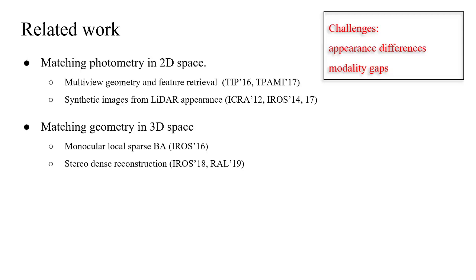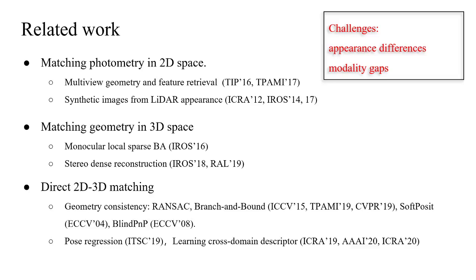Similarly, for stereo camera, we can reconstruct dense point clouds and match with LiDAR maps. The third approach is directly matching across 2D and 3D domain. We rely on extracting geometric 2D and 3D point features. We can use RANSAC and branch-and-bound for global pose localization, or use RANSAC and PnP for local 2D-3D correspondence. Recently, there are some learning-based methods that try to directly regress camera poses or learn cross-domain descriptors to establish 2D-3D correspondence.